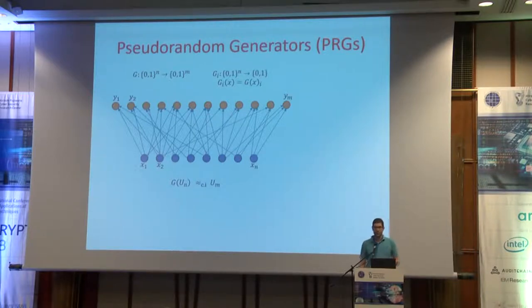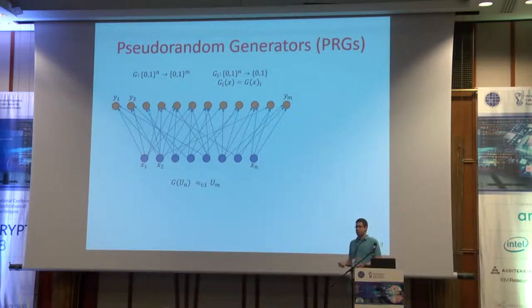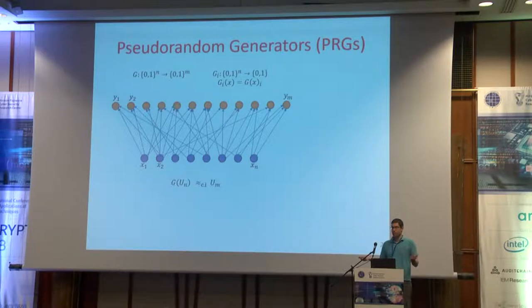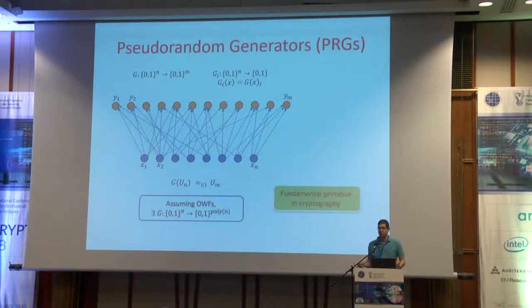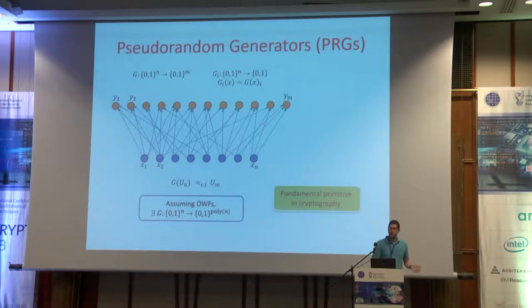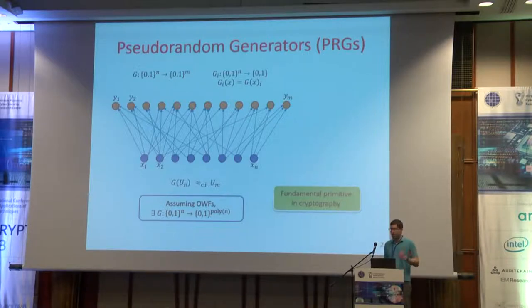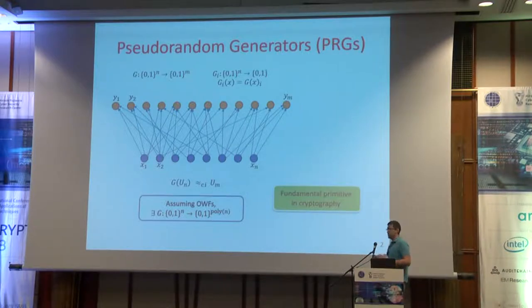The pseudorandomness of a PRG, or the security of this primitive, is defined by saying that any computationally bounded adversary cannot distinguish G on a random seed versus a truly uniform string of length m. This is the security definition. It's a basic primitive in cryptography — the basic building block in constructing pseudorandom functions, such as the GGM construction. And we also know that, assuming one-way functions, we can build a PRG with arbitrary polynomial stretch by the Håstad construction.